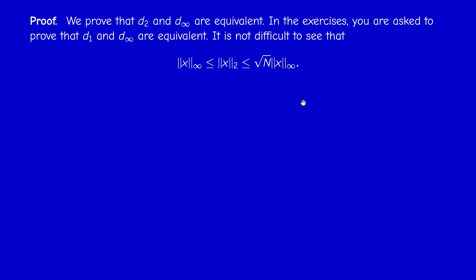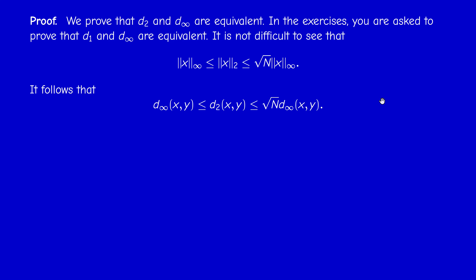Because each term is less than its maximum, when you sum n times the maximum you get that bound — very simple, and probably encountered before. This is the key to proving topological equivalence. Therefore, replacing x by x−y, we get: d∞(x,y) ≤ d₂(x,y) ≤ √n · d∞(x,y).